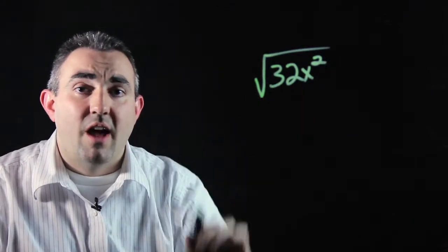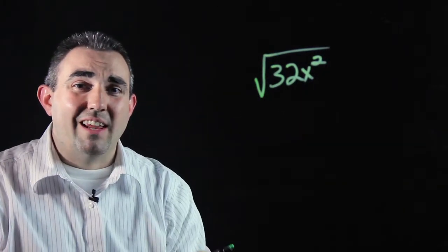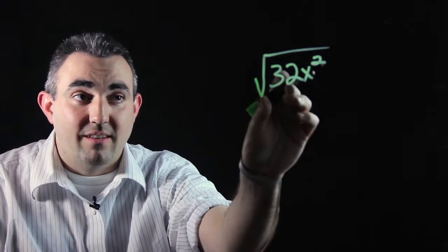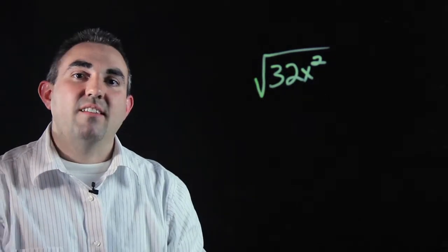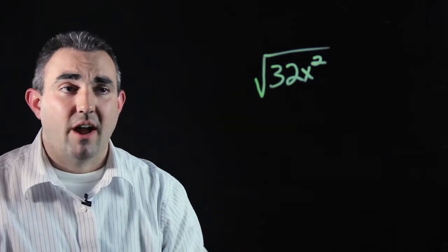However, 32 is not a perfect square, therefore there's not any given number that you can multiply by itself to get 32 unless it's some sort of decimal number, which is going to be very hard to figure out.